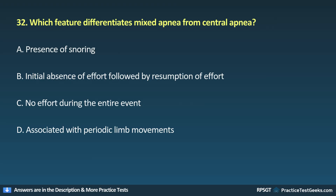Question 32: Which feature differentiates mixed apnea from central apnea? A. Presence of snoring, B. Initial absence of effort followed by resumption of effort, C. No effort during the entire event, D. Associated with periodic limb movements.